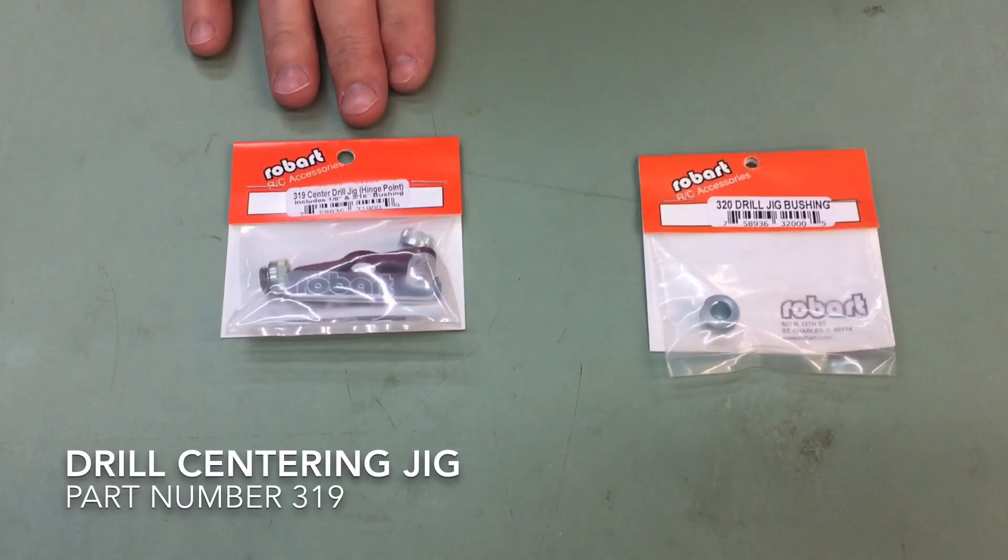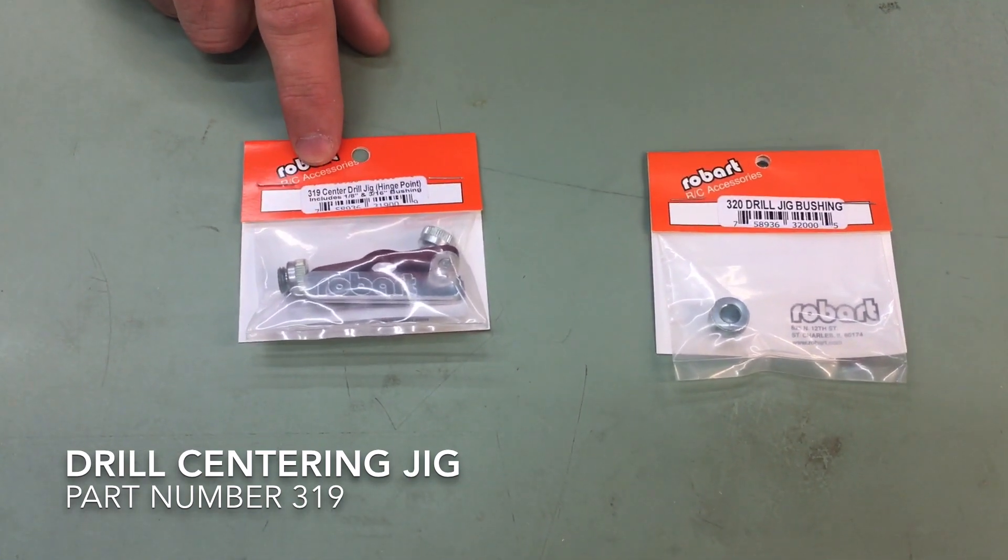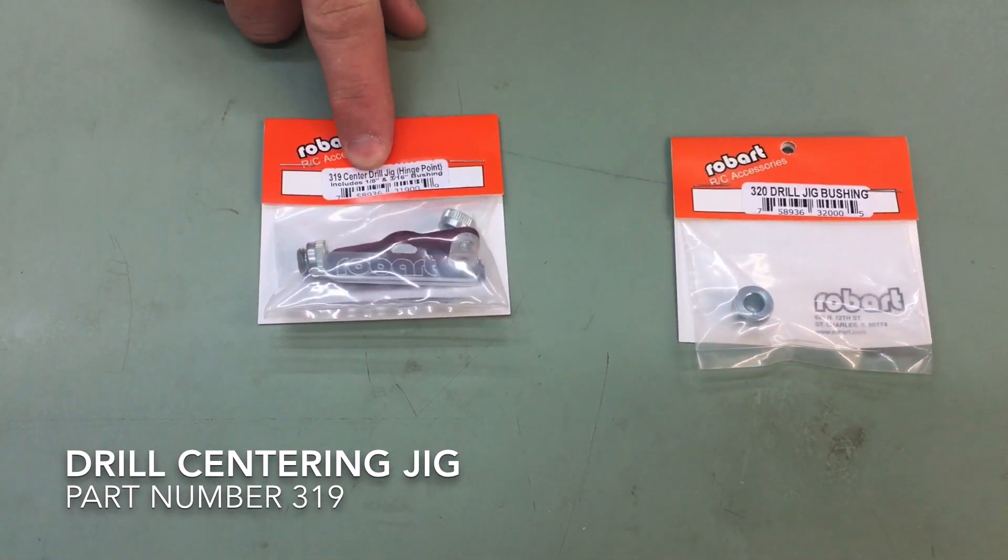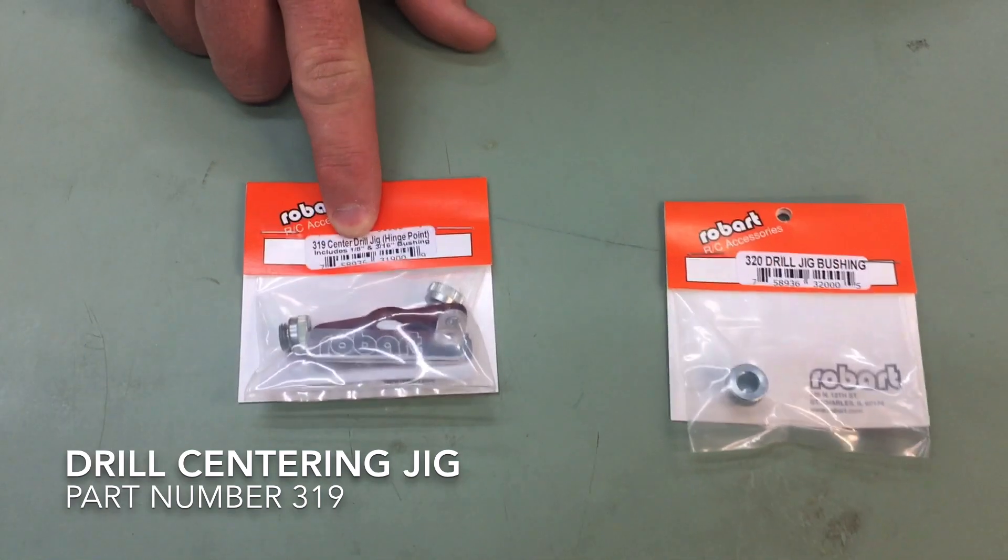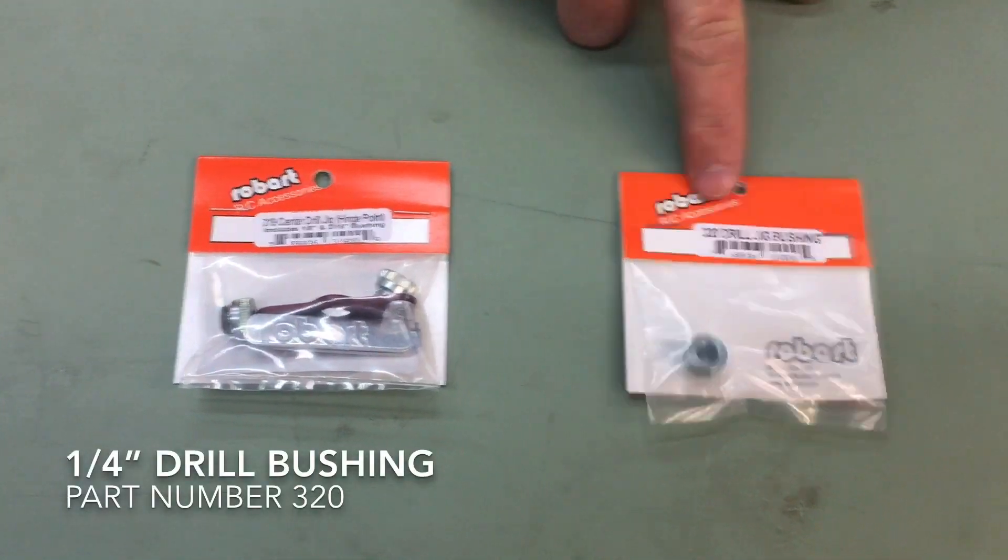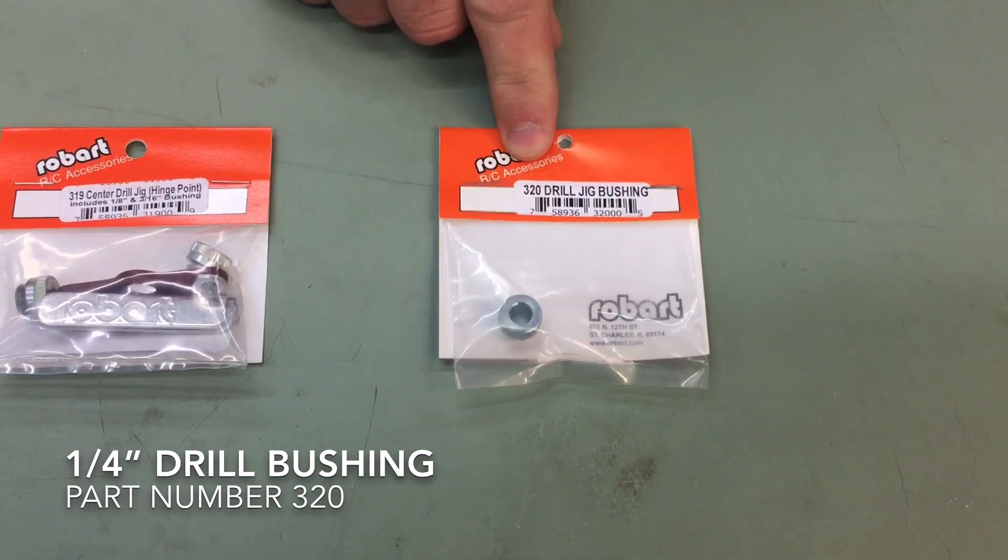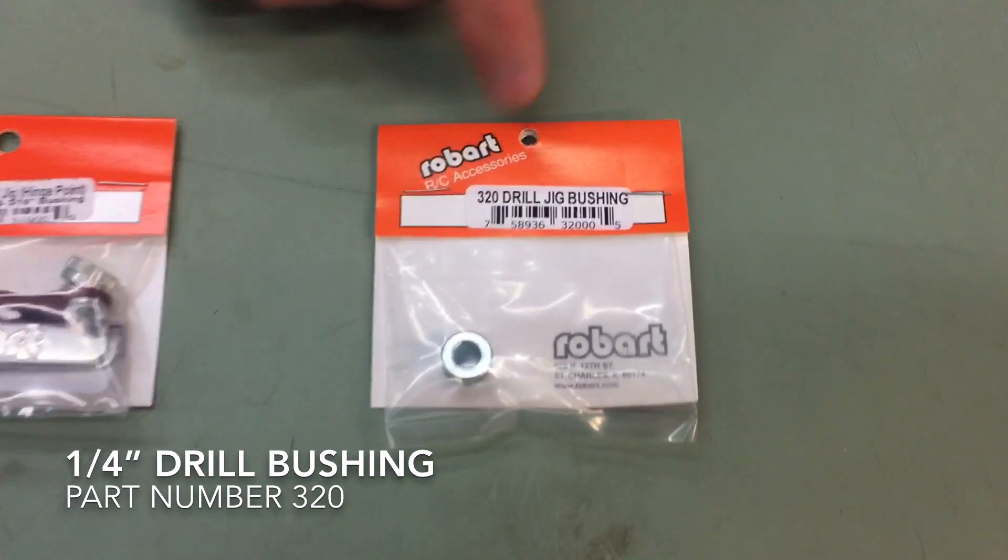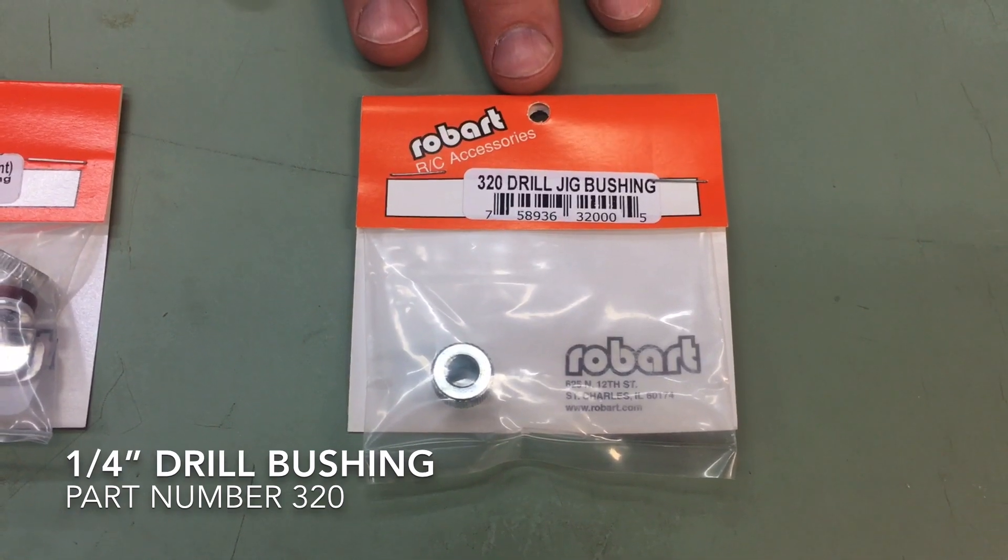So this is the drill centering jig. This is part number 319 and this comes with a 1/8 inch drill bushing as well as a 3/16 inch drill bushing. Over here we have an additional bushing that is sold separately. This is our part number 320 and this is the quarter inch drill bushing.